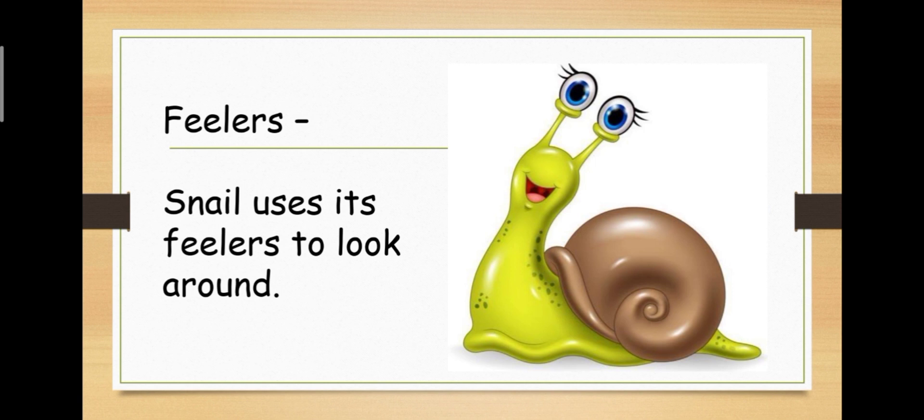First word is feelers. And sentence is snail uses its feelers to look around. Yani aspas dekhne ke liye snail apne feelers ka use karti hai. Can you see eyes on the top of feelers? Here? Yes, dear children.